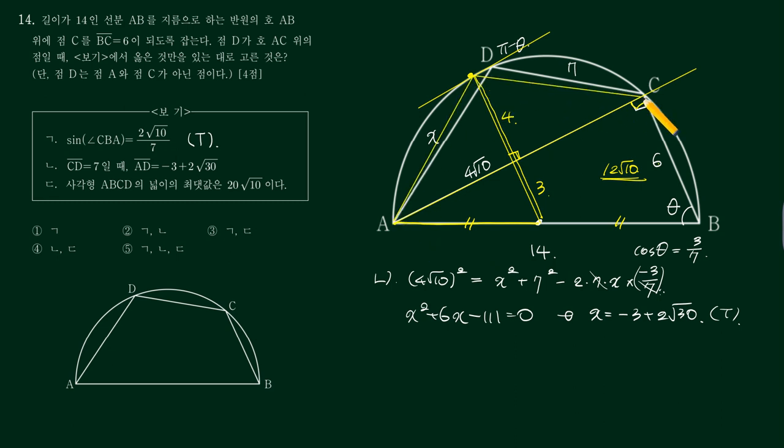그래서 도형이 이렇게 되면 이거는 따로 계산 안 해도 바로 넓이 구할 수 있으니까. 4루트7 밑변, 높이가 4가 되는 삼각형.